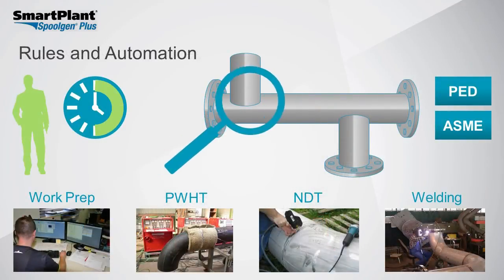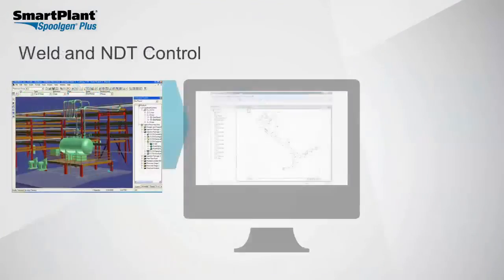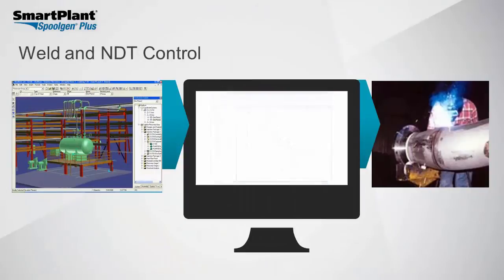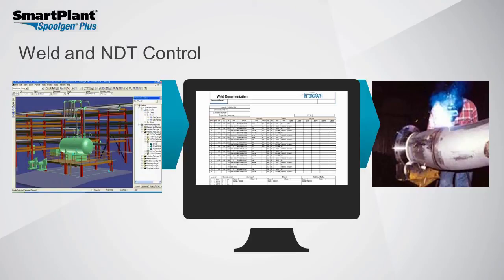However, that's only the first part of the problem with fabricating pipe spools. A wide array of other documentation is required to get those spools to the site. Attention has to be paid to industry requirements, work preparation, post-weld heat treating processes, non-destructive testing processes and documentation, as well as welding documentation and plans. All of this can be automated instead of the specialist doing it manually, allowing the specialist to focus on writing the rules and configuring them in the system.